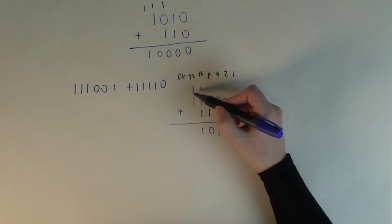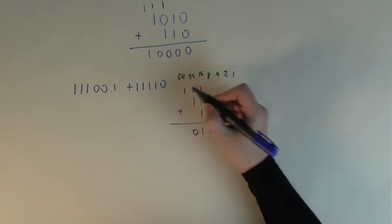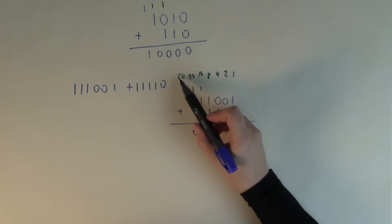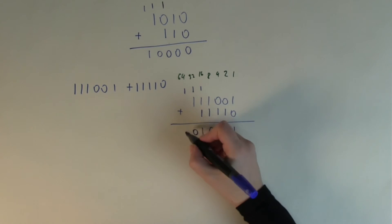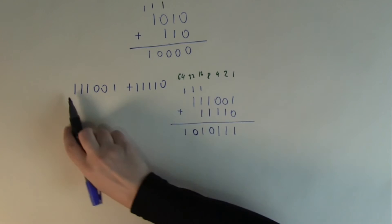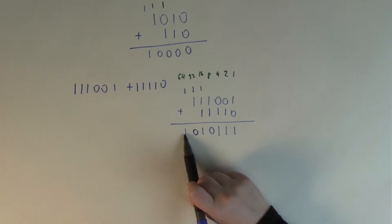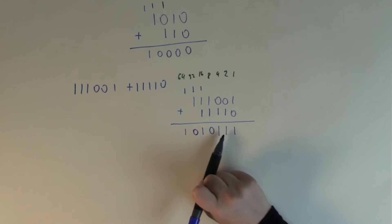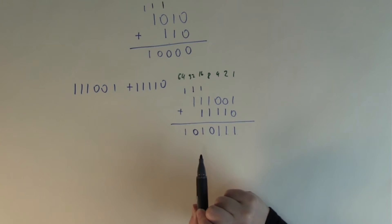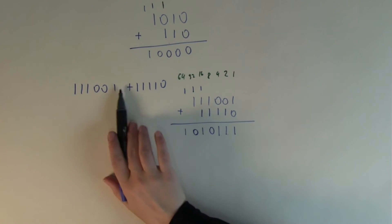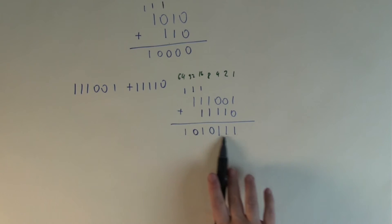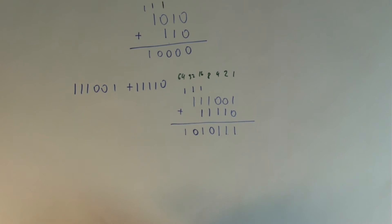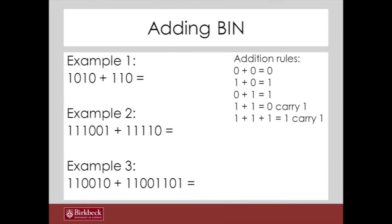Then 1 + 1 = 0, carry the 1, because two 32s make one 64. There is nothing else to add so just copy the 1 down. The sum of this addition is 1010111. You can always double-check by converting each number back to decimal, adding them together, and verifying the result, but that takes quite some time.